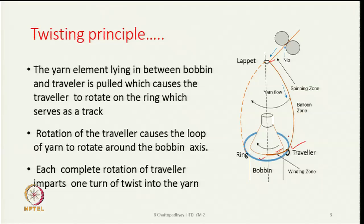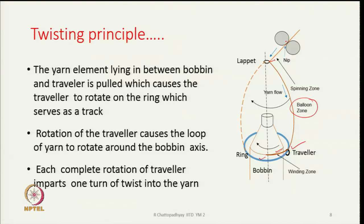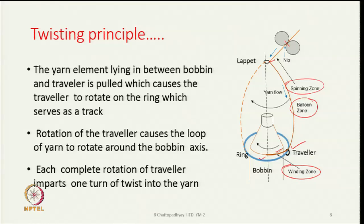When this loop rotates at high speed, it looks like a balloon, so we call it the spinning balloon. The yarn path is divided into three zones: the spinning zone (from front roller delivery to the lappet), the balloon zone (from lappet to traveller), and the winding zone (from traveller to the bobbin).